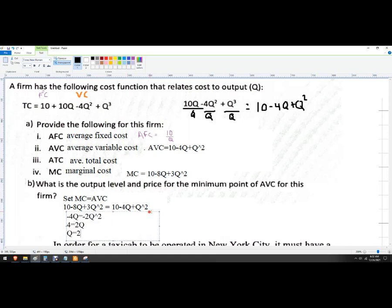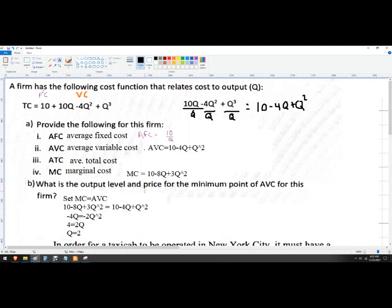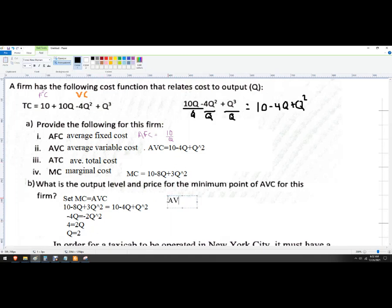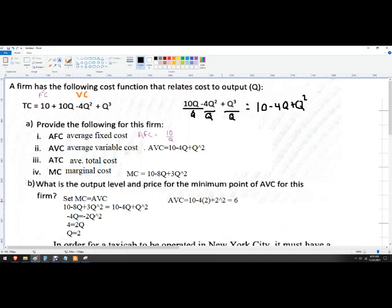So the quantity 2 is where this happens, so that's the quantity part. The output level means the same thing. And then you can just take that quantity of 2 and plug it into either function here. So we want to know what's the average variable cost when quantity is 2. So we're going to go 10 minus 4 times 2 plus 2 squared. And so that turns into 4, that turns into 8, so that's negative 4 minus that is 6. You can get that answer with either one. And that is consistent with what we saw on the graph as well. So that's how to do all of that.